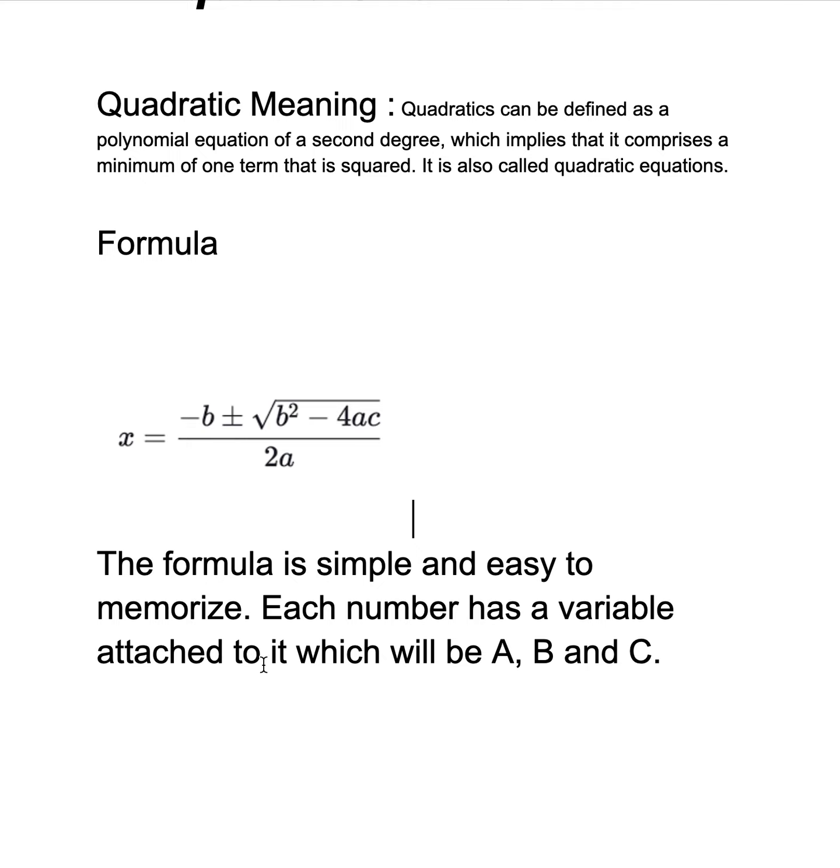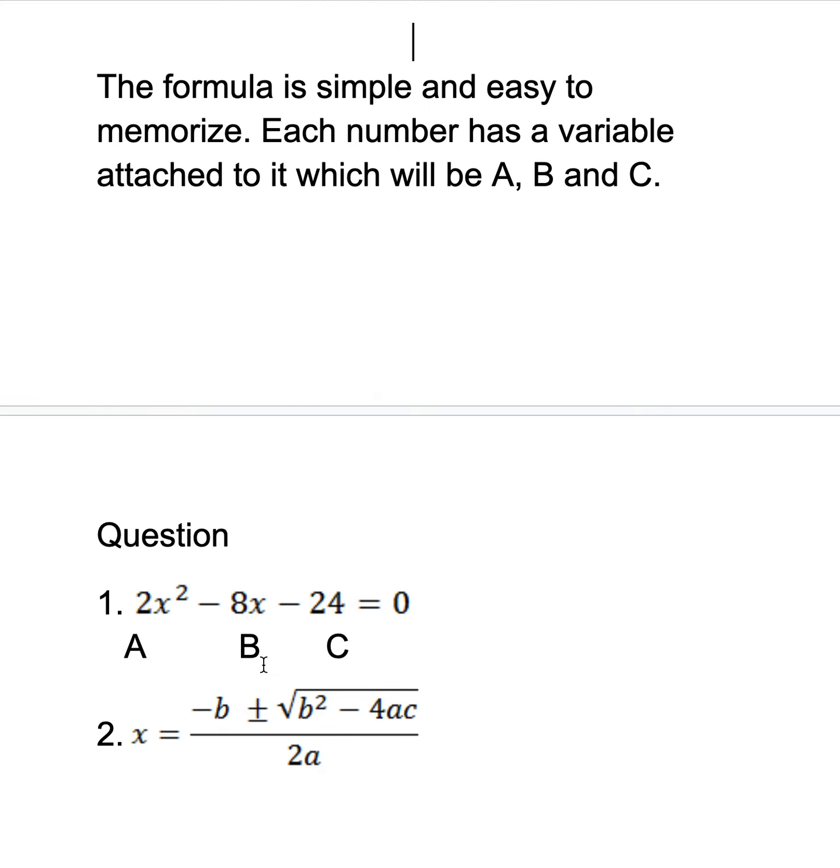So we have 2x² - 8x - 24 = 0. You see underneath each number I put an alphabet. That alphabet has to be right there. The first set of numbers, 2x², that's A. Then the second, 8x, that's B. Then 24, that's C.